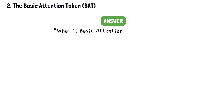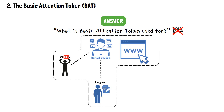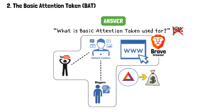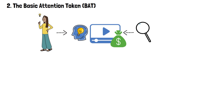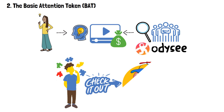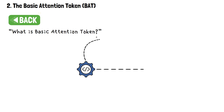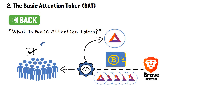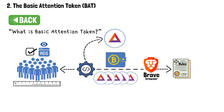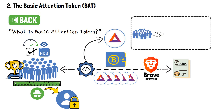But what is Basic Attention Token used for doesn't end there. Content creators — such as YouTubers, bloggers, or websites — play a crucial role in Brave's ecosystem. BAT tokens provide an alternative way for them to monetize their content. Users who appreciate and engage with their content can tip them directly with BAT, thereby incentivizing high-quality content creation. The underlying mechanism involves Brave's integrated digital wallet, where BAT tokens go to users who opt in to view ads. This engagement is measured anonymously, ensuring user privacy, and creating a more equitable relationship between users, advertisers, and content creators.